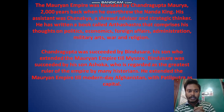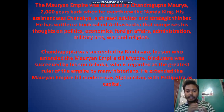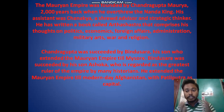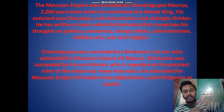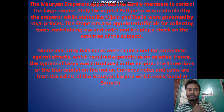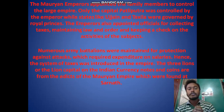Chandragupta was succeeded by his son Bindusara, who extended the Mauryan Empire as far as Mysore. Bindusara was then succeeded by his son Ashoka, who is regarded by many historians as the greatest ruler of the empire. Ashoka extended the Mauryan Empire to modern-day Afghanistan, with Patliputra as the capital. The presence of Buddhist temples in Afghanistan shows the real extent of Ashoka's empire. The Mauryan Empire appointed family members and royal princes to govern other states like Ujjain and Taksila.